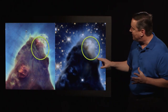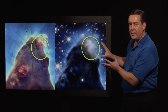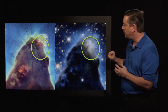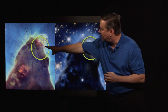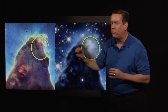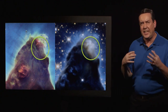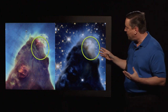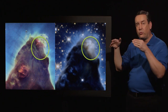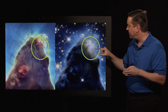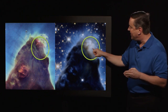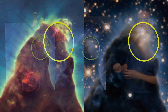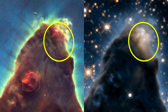Also notice that there is star formation going on inside the pillar. Here in the visible light image, you see a little bit of red that indicates star formation, but in the infrared, you're looking through some of that gas into the cavity inside the pillar in which you can see stars that are forming.